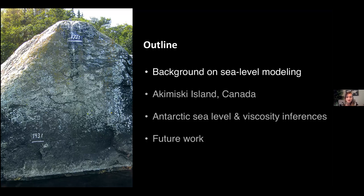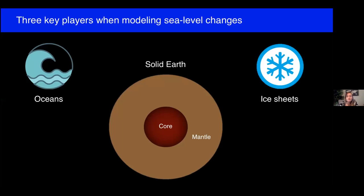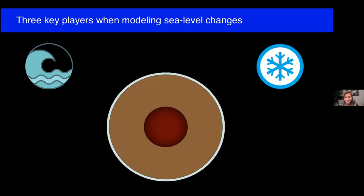Let's start with some background on sea level modeling. If anyone has any questions or points of clarification, please feel free to ask as we go along. When modeling sea level changes, there are three key players. These are the oceans, the ice sheets, and the solid earth, upon which these two masses rest. Let's go through these in turn, starting with the oceans.